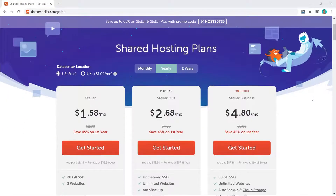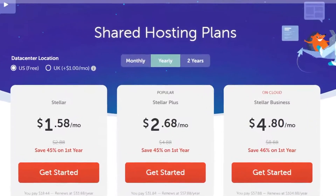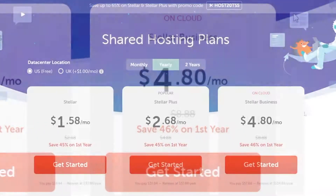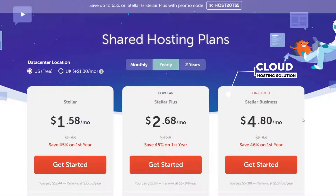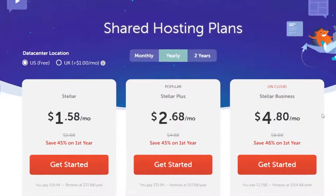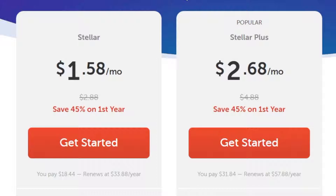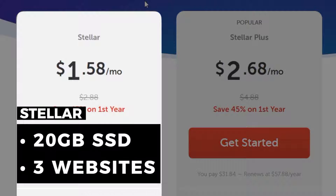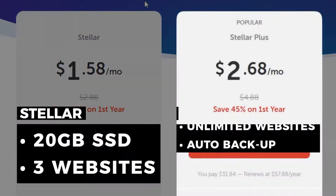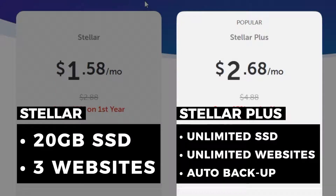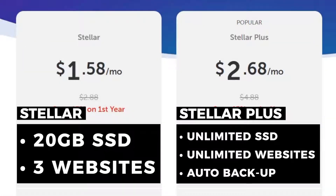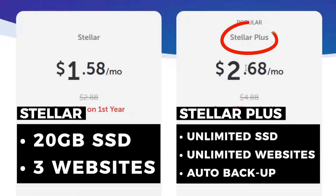If we scroll down to the plans, you can see there are three main options available: the Stellar, Stellar Plus, and Stellar Business. We won't talk about the Stellar Business for now as it is more of a cloud hosting solution. The Stellar plan allows you to have 20 gigabytes of storage and three websites, whereas the Stellar Plus plan has unlimited for both and the added extra of auto backup, which is really important. If you're just starting out and only need one or two websites, go with Stellar. If you need more than that and want the auto backup, go with Stellar Plus.